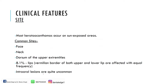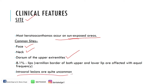Regarding the site of occurrence — since one of the most common causes is sun exposure, it is commonly seen in sun-exposed areas: most commonly on the face, neck, and dorsum of the upper extremities. Intraoral lesions are quite uncommon, but 8.1 percent of the lesions appear on the lips. The vermilion border of both upper and lower lip are affected with equal frequencies.